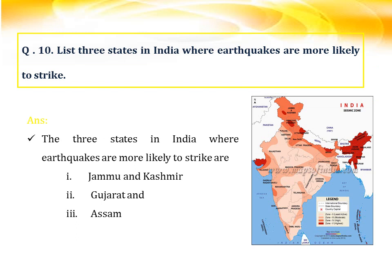Question number ten: list three states in India where earthquakes are most likely to strike. Although it is impossible to determine exactly where an earthquake will happen, the boundaries of tectonic plates are weak zones where earthquakes are more likely to occur. In India, the most threatened places are Jammu and Kashmir, Gujarat, and Assam.